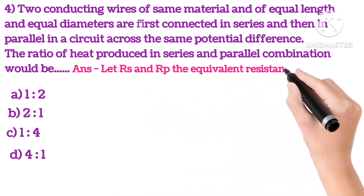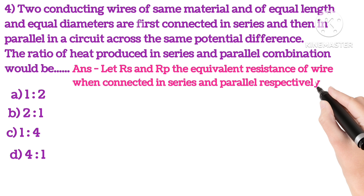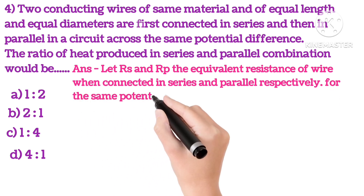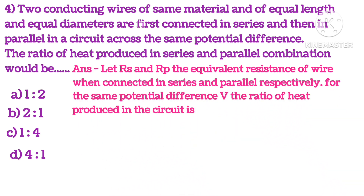Let RS and RP be the equivalent resistance of wire when connected in series and parallel respectively. For same potential difference V, the ratio of heat produced in the circuit is HS upon HP. We know that H equals V squared upon R into T. So we get the ratio RP upon RS.